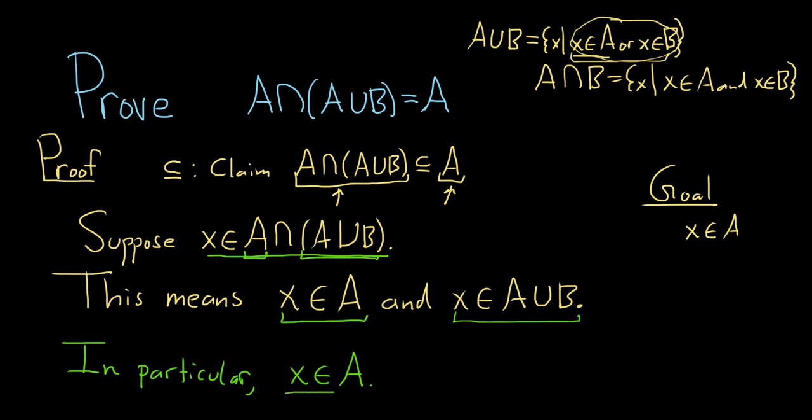So we started with an element in A intersection A union B, and we showed it was in A. So we can assume this holds for all elements. We didn't say anything about X, so it could be any element. So this shows one direction. This shows that A intersected with A union B is a subset of A.